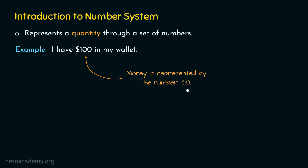The quantity is represented through the number 100. In this way, I can represent the money in my pocket by this number 100. The number system used here is the decimal number system, where each digit of the number can lie in the range from 0 to 9. A number system is a system that represents a quantity through a set of numbers.